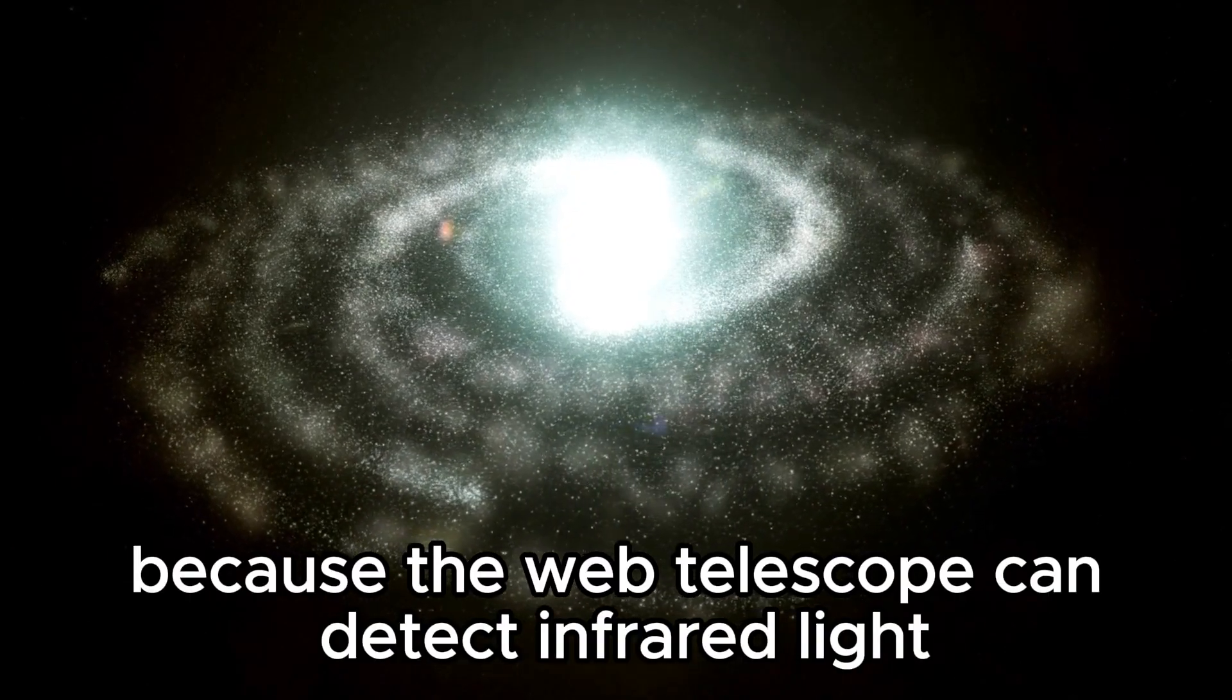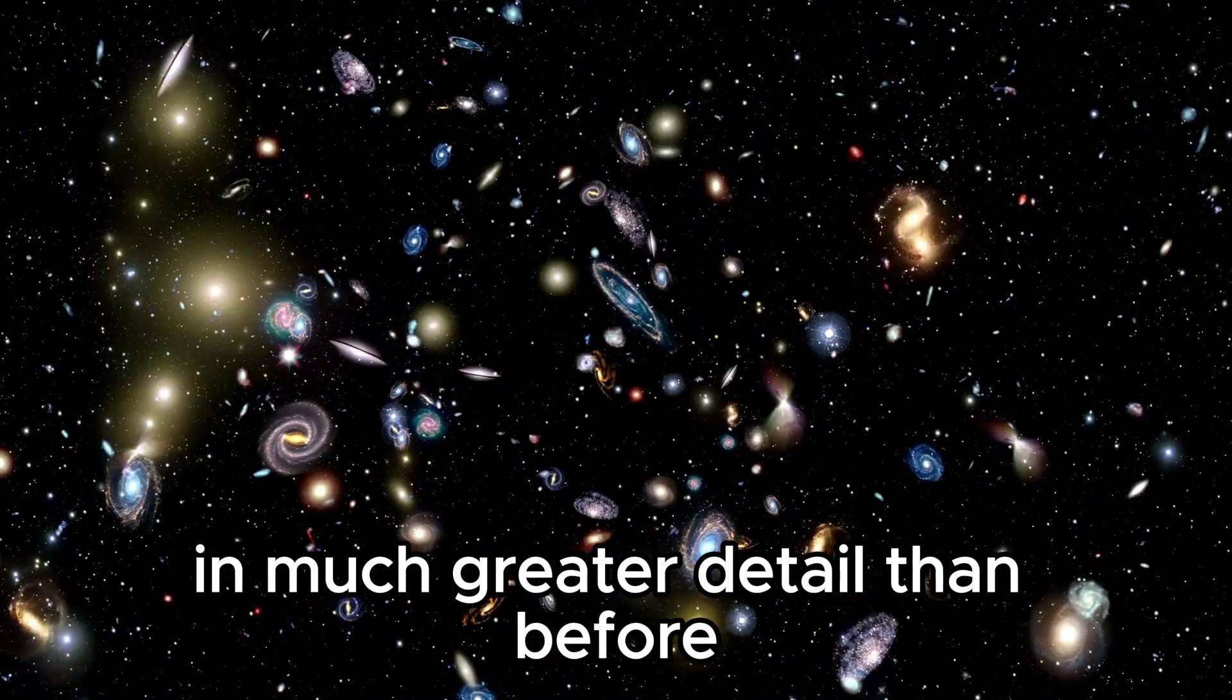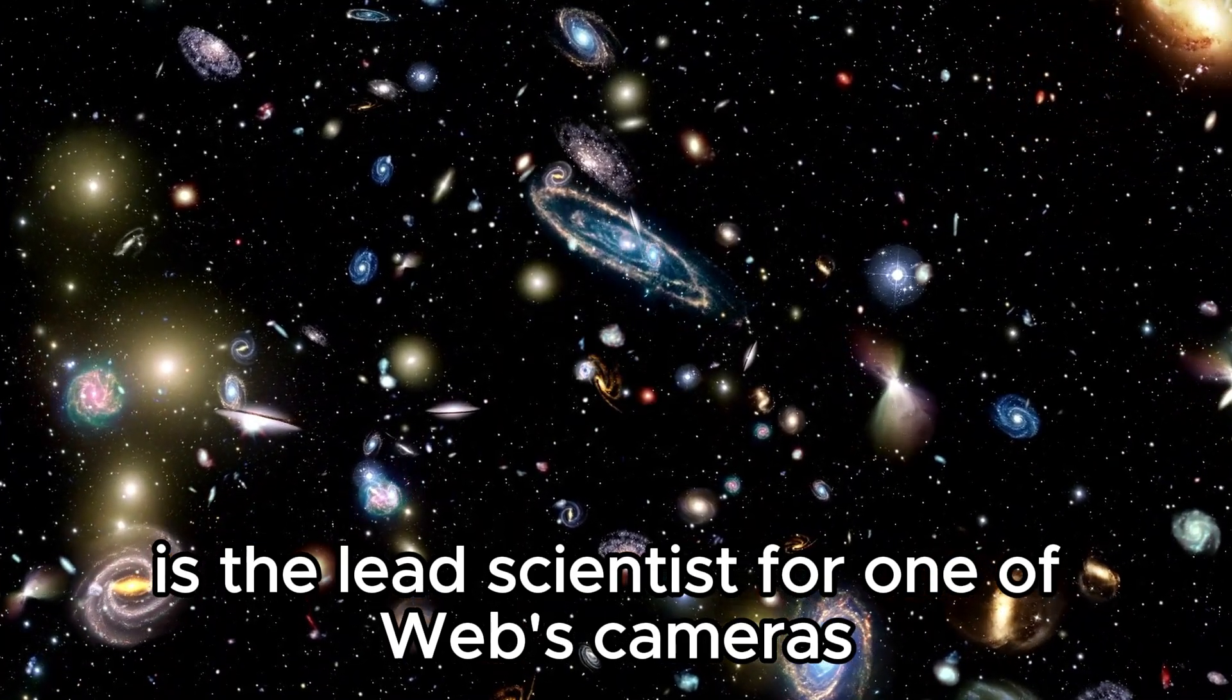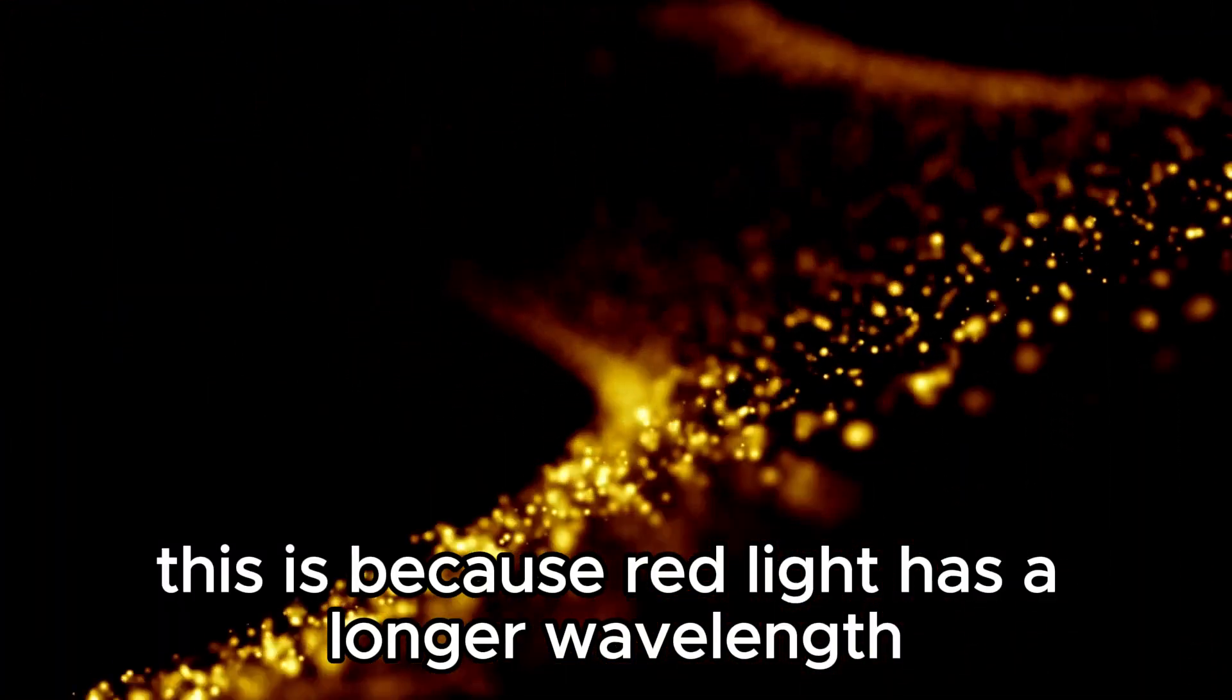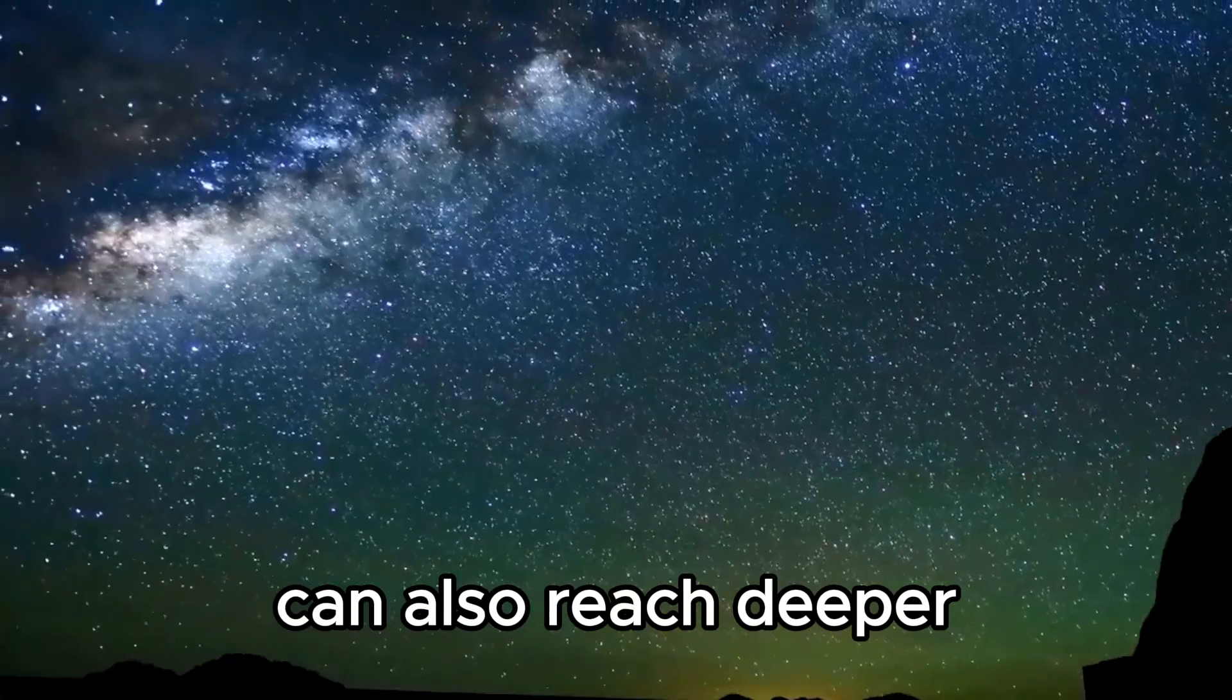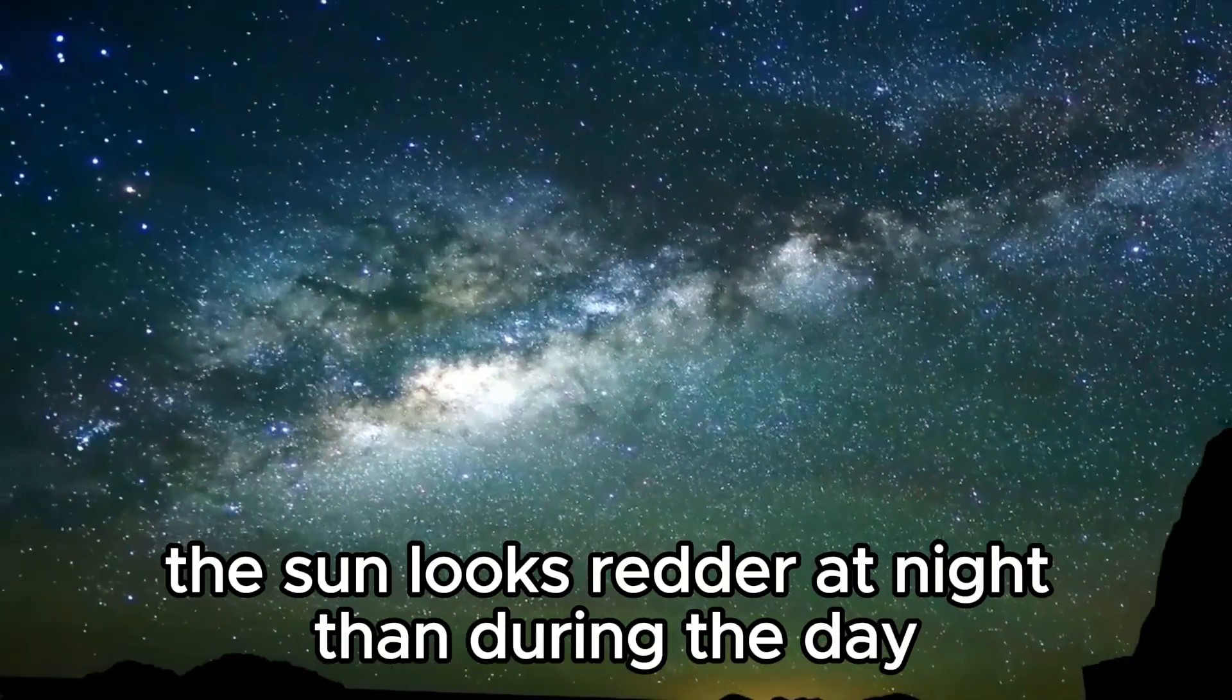Because the Webb telescope can detect infrared light, researchers will be able to study these areas in much greater detail than before. An infrared astronomer at the University of Arizona named Maria is the lead scientist for one of Webb's cameras. She explains that this is because red light has a longer wavelength and can penetrate through the dust in our environment better than blue light. Infrared light can also reach deeper into dusty regions than visible light. As a result, the sun looks redder at night than during the day.